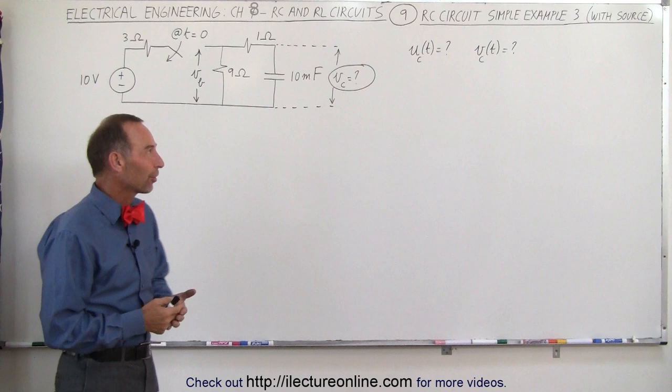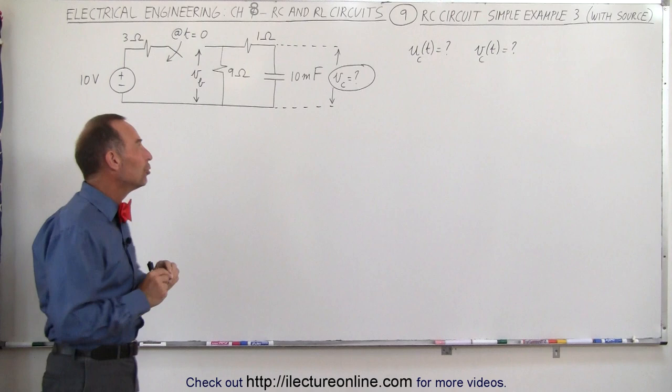Welcome to Electron Align. Here's our third example of how to work with an RC circuit. In this circuit we do have a voltage source, but it plays a limited role.